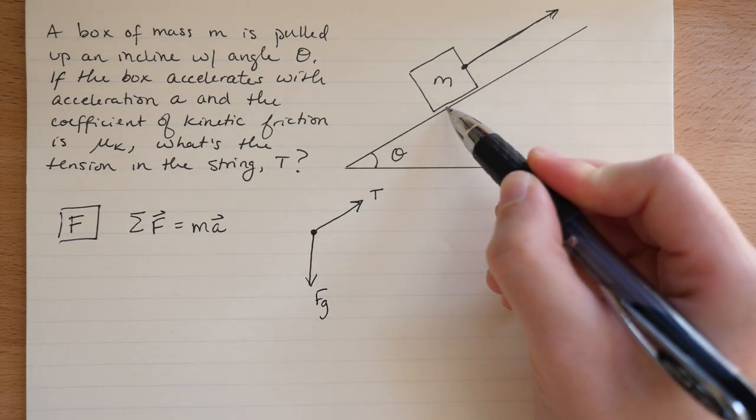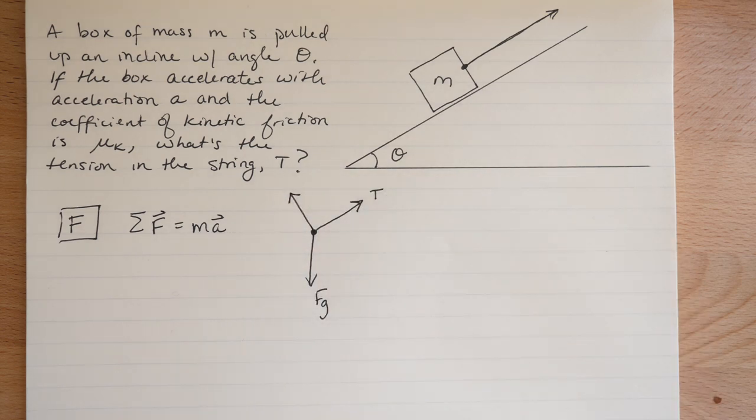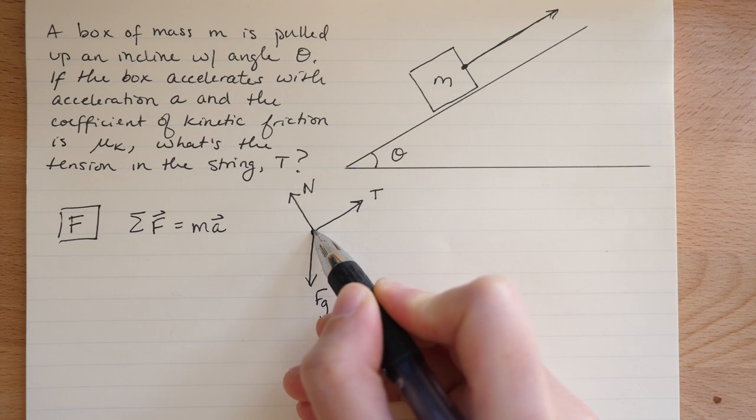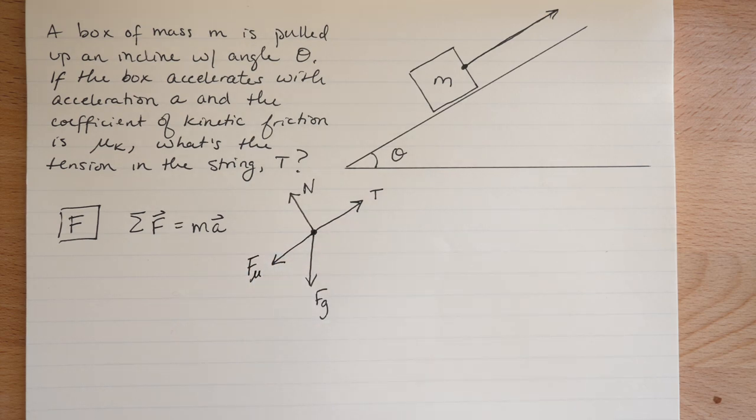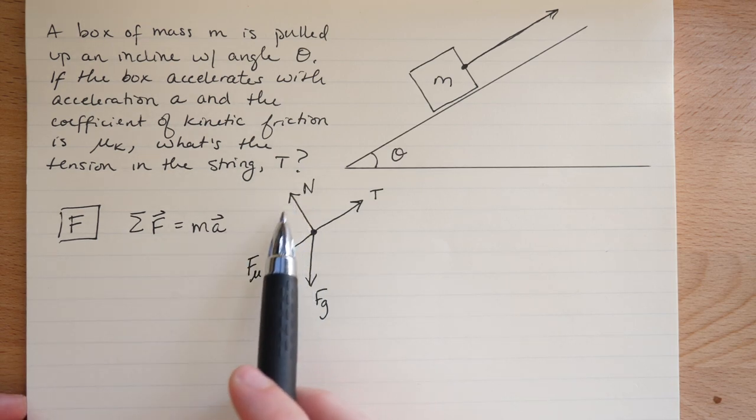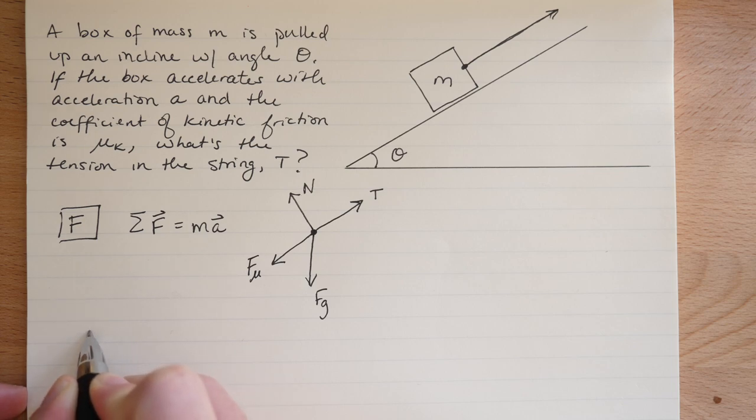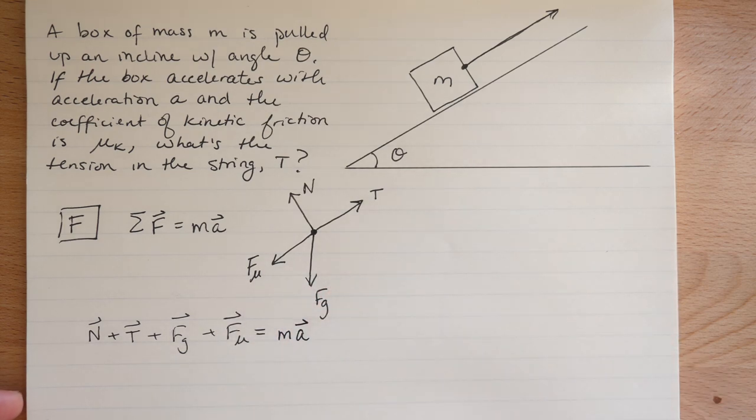The gravitational force is acting straight down. We have a normal force, and the normal force always acts perpendicular to the interface between the two objects, so it's going to be 90 degrees from the tension force. Finally, we have the friction force which is going to point straight down the incline, exactly opposite to the tension force T. That means if we were to flesh out F equals ma, we would have the sum of all four of these forces equals ma. So N plus T plus Fg plus Fμ equals M times A.